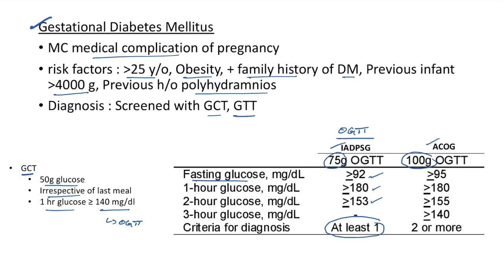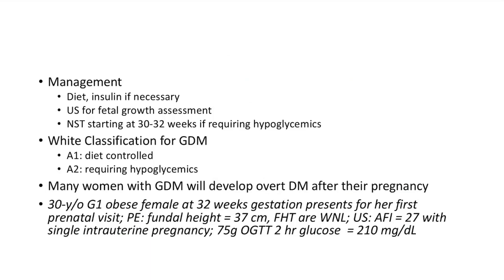According to ACOG cutoff values: fasting ≥95, 1-hour ≥180, 2-hour ≥155, and 3-hour glucose ≥140 mg/dL. GDM is diagnosed if two or more of these values are above the cutoff.